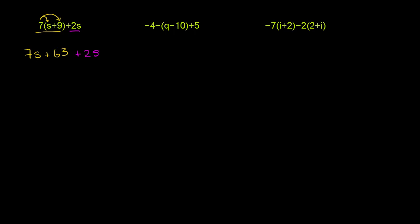Well, if I have 7s and I'm going to add another 2s to them, I'm going to have 9s. So you add those two parts, you get 9s, and then you still have your plus 63.